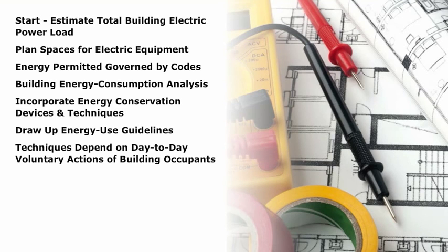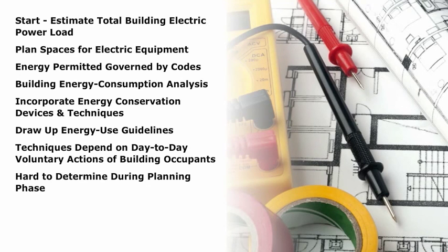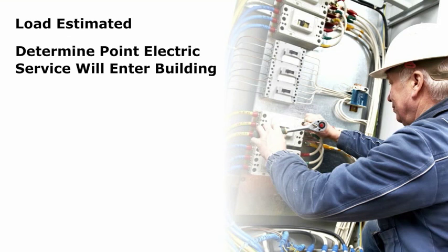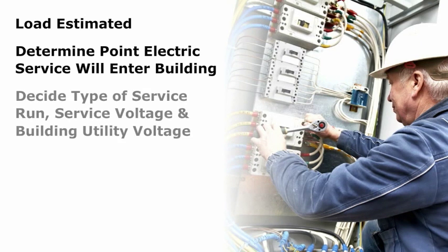Energy conservation techniques draw up energy use guidelines to be applied when the building is occupied. These techniques depend on the day-to-day voluntary actions of the building's occupants, which are hard to determine during the planning phase. Once the electrical load is estimated, the engineer and the utility determine the point at which the electrical service will enter the building, the meter location, the type of service run, service voltage, and the building utility voltage.